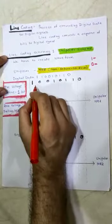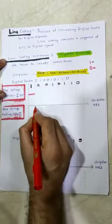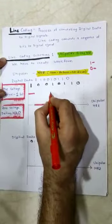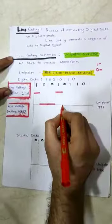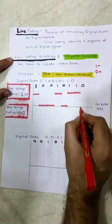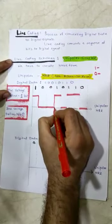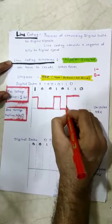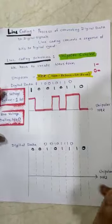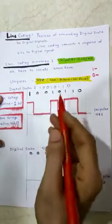So when data one appears in the digital signal, we draw a line above the reference line. When zero appears, it is on the reference line. Again zero appears — on the same reference line. One appears — above the reference line. Zero appears — on the reference line. One again — above. Zero — on the reference line. We then connect all the lines together to create a waveform using unipolar NRZ.